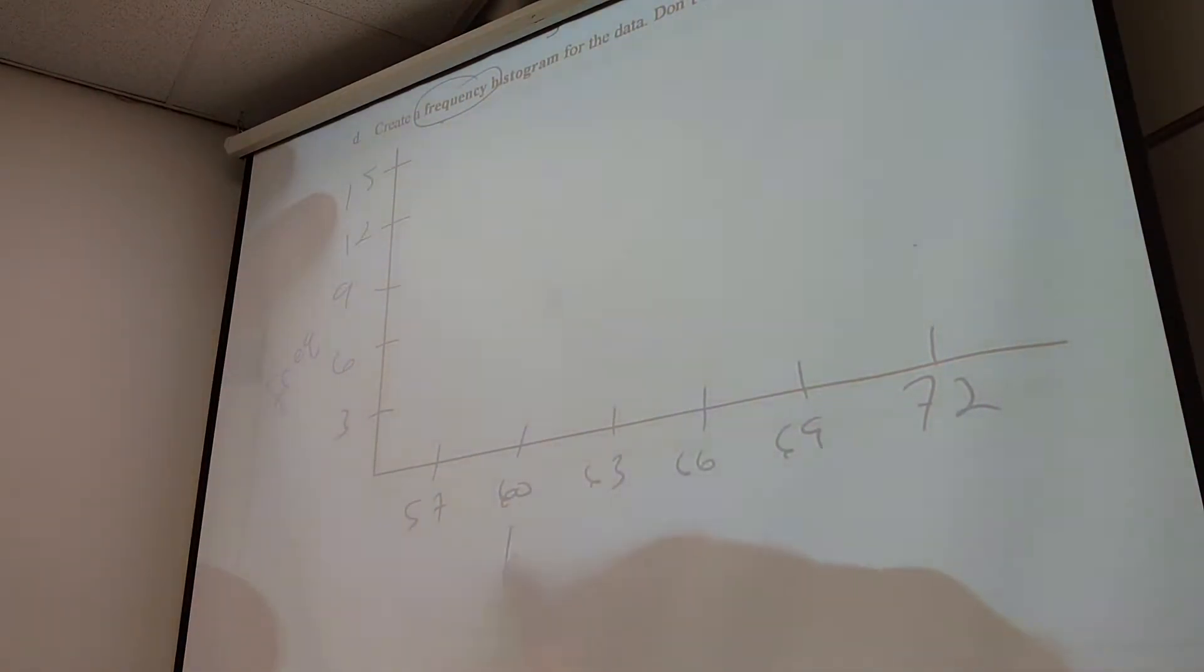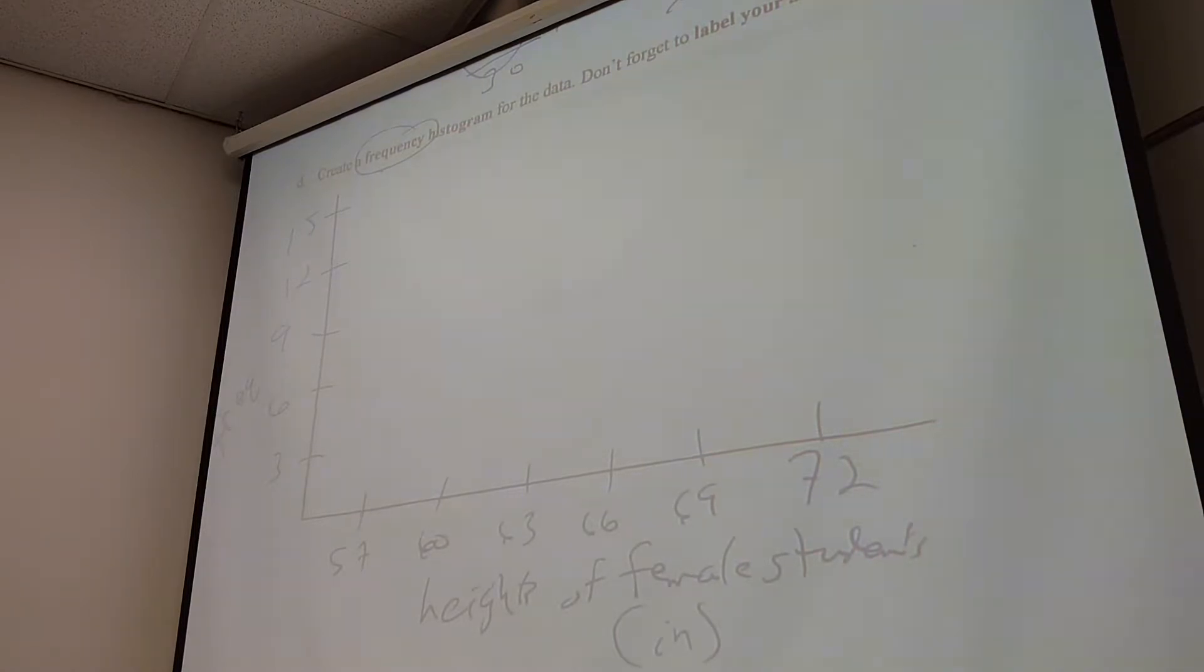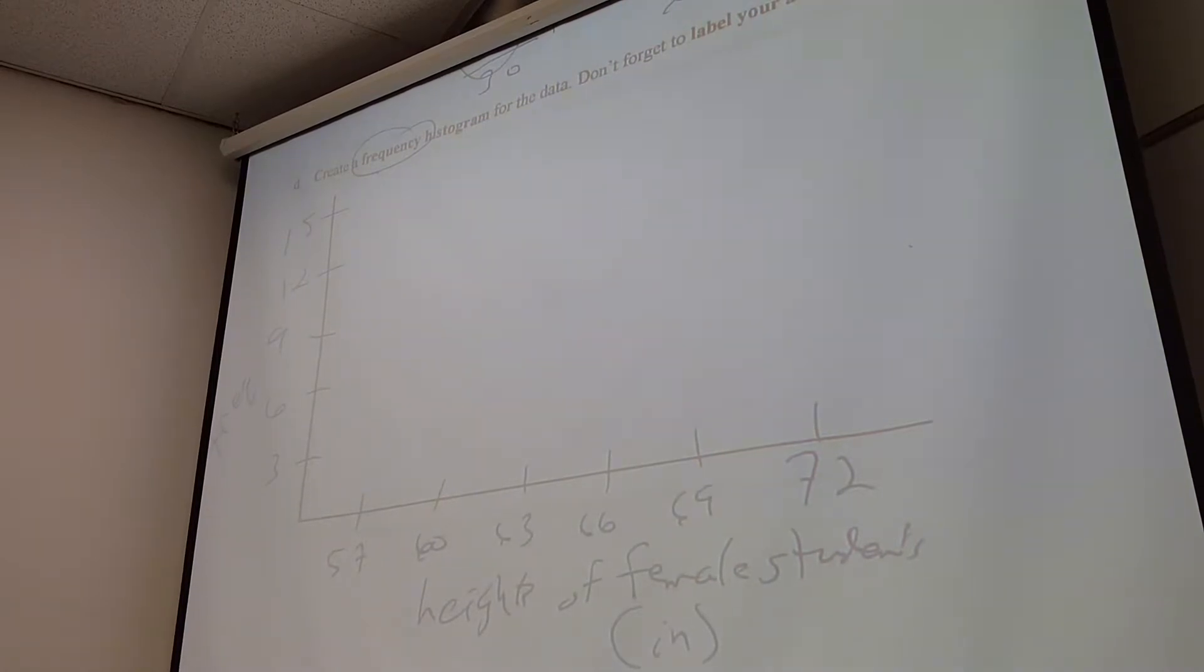What's the label of this one? Frequency. Frequency. And what's the label of this one? Heights. Heights. Of. Female. Students. Inches. Yes, sir. Will you be marking this down on, like, for that, um, x-axis? Like, you'd have to put, uh, another math class I had, like, you'd put a big line and a little line, and then you'd put 57, like, to show the break of numbers, because you're going from zero to 57.